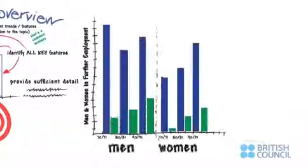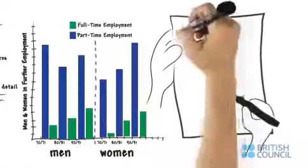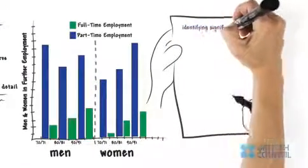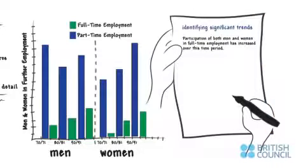Here's an example of identifying significant trends. Looking at this graph, we would say, from the graph, it is apparent that participation of both men and women in full-time employment has increased over this time period.